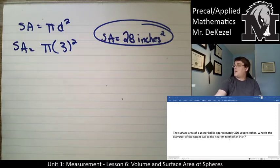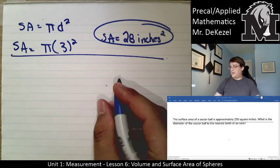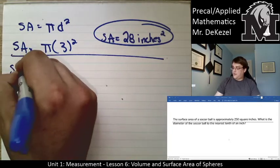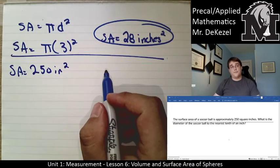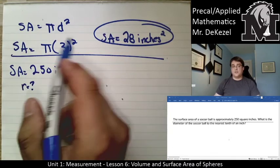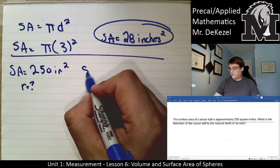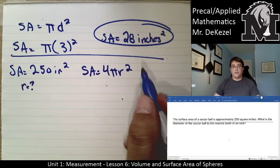The surface area of a soccer ball is 250 square inches. What is the diameter of the soccer ball to the nearest tenth of an inch? So this time we're given the surface area being 250 inches squared, and we want to know what the radius is. So let's use the other formula, surface area equals 4πr² to find out what the radius would be.